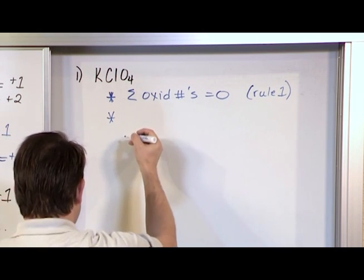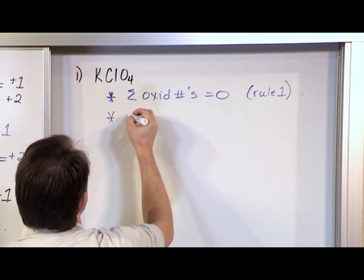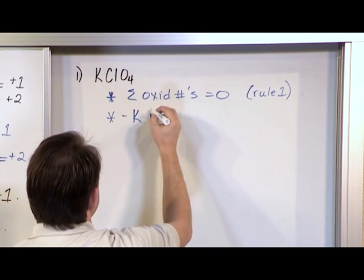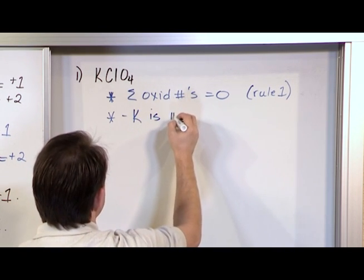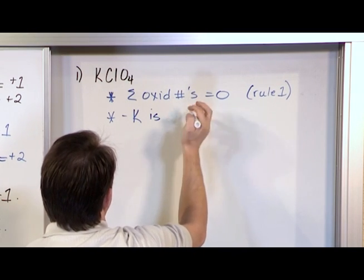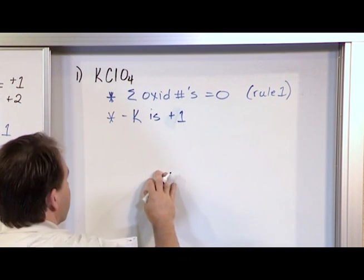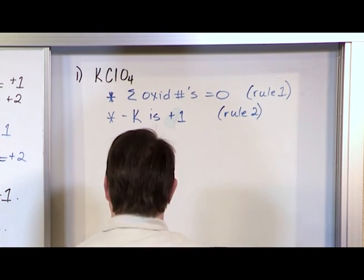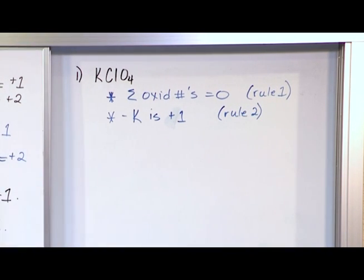So I'm going to put an asterisk here, and I'm going to say that for potassium, K, the oxidation number is plus one. And I'm going to write down to myself rule number two, because rule number two applies.